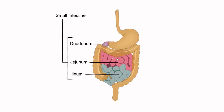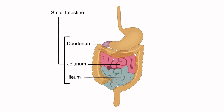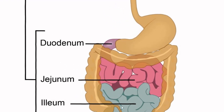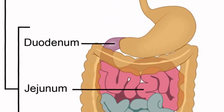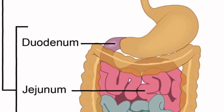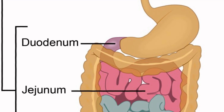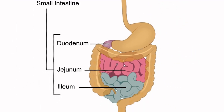The small intestine is divided into three sections: duodenum, jejunum, and ileum. The duodenum is the first section, directly connected to the stomach. This is where the three intestinal juices are secreted, so most of the digestion in the small intestine occurs here.